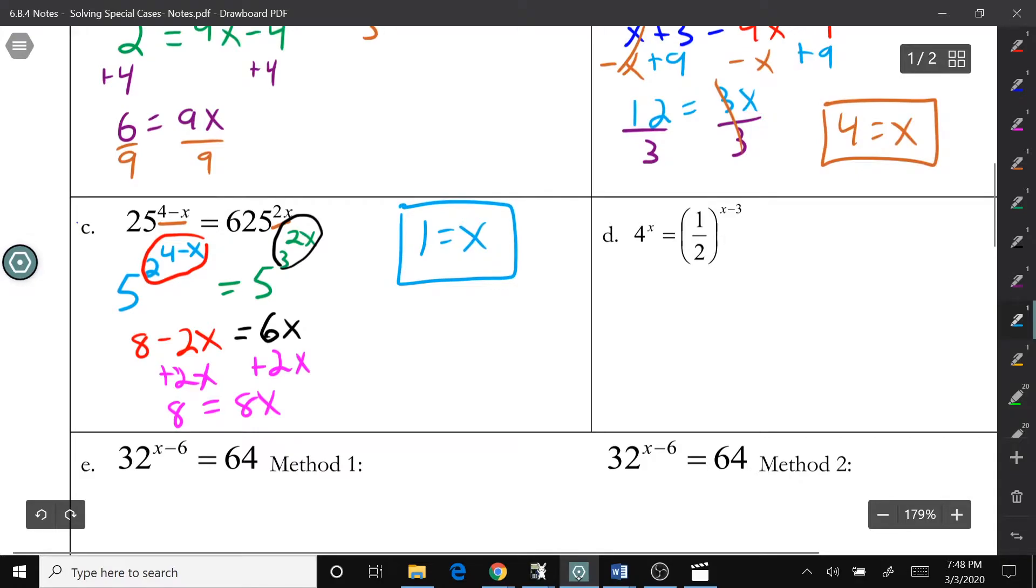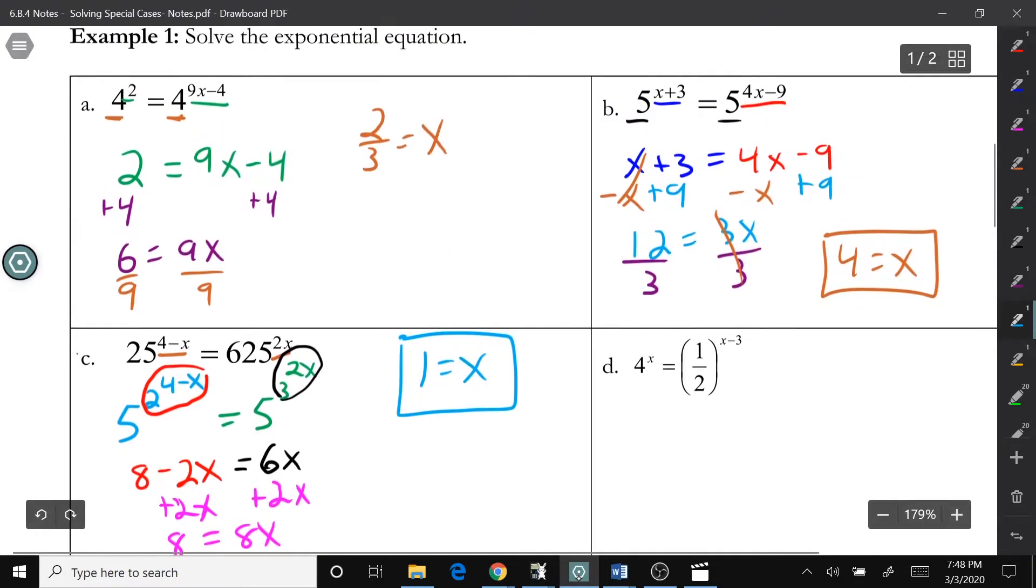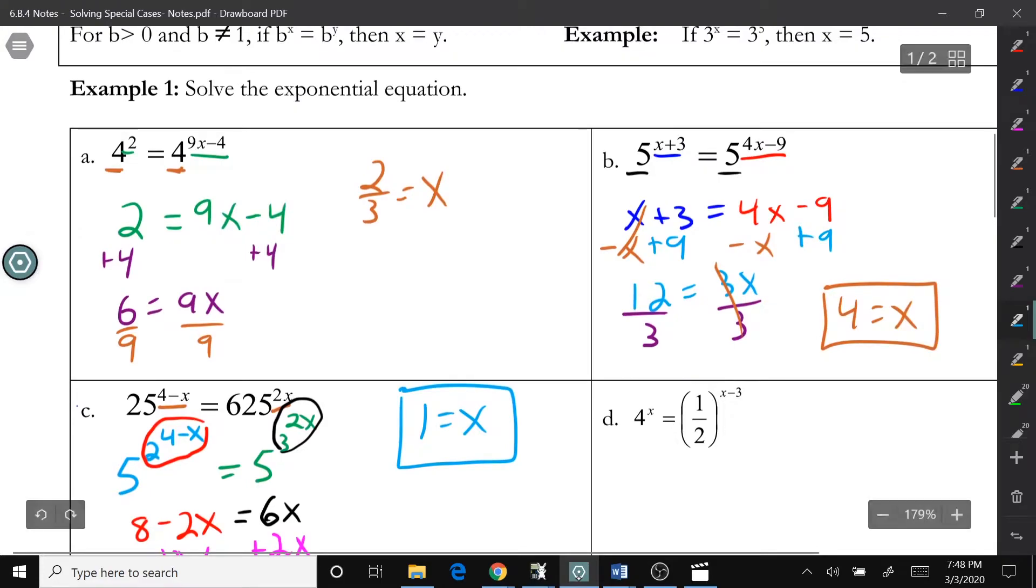So, I know that it can be hard to see that 5 squared is 25, and 5 to the 3rd power is 625. So, that's why I really don't recommend using this strategy, unless you have something like we have in A and B, where it's clearly the same base.